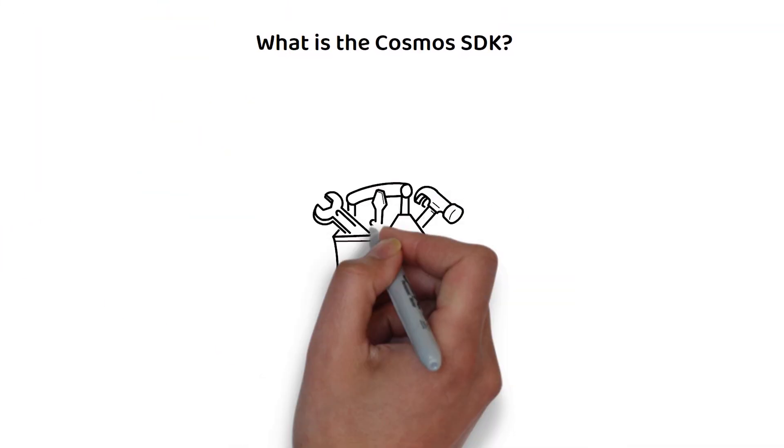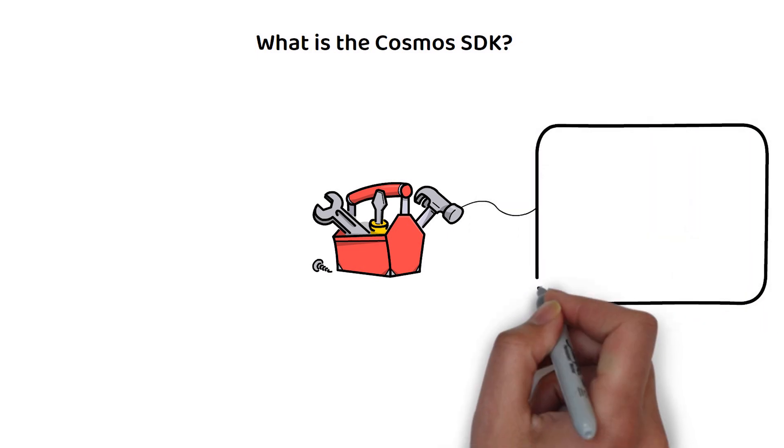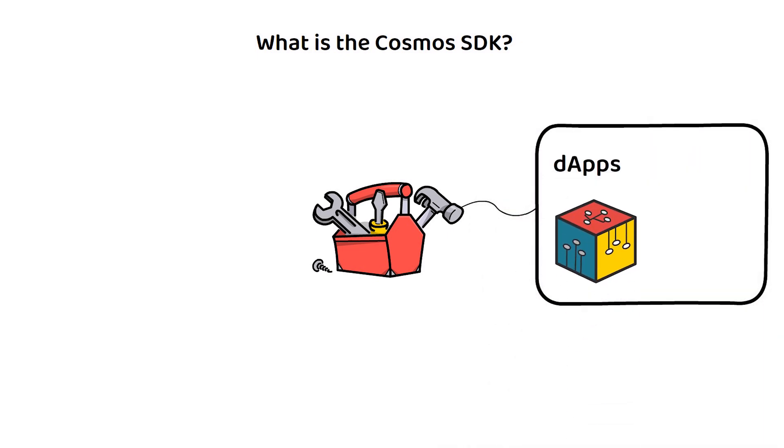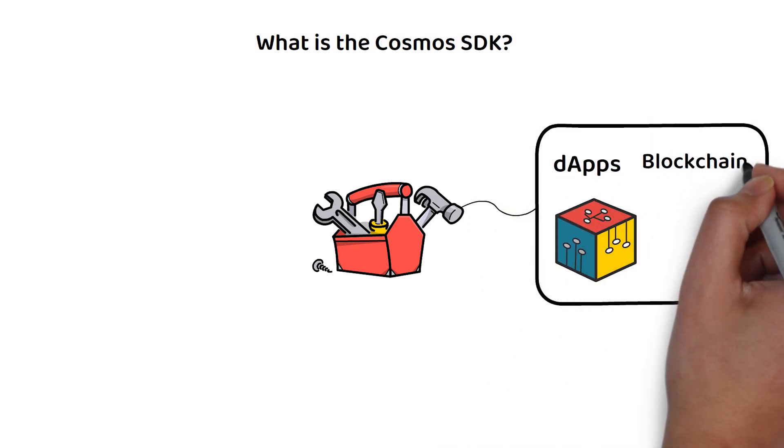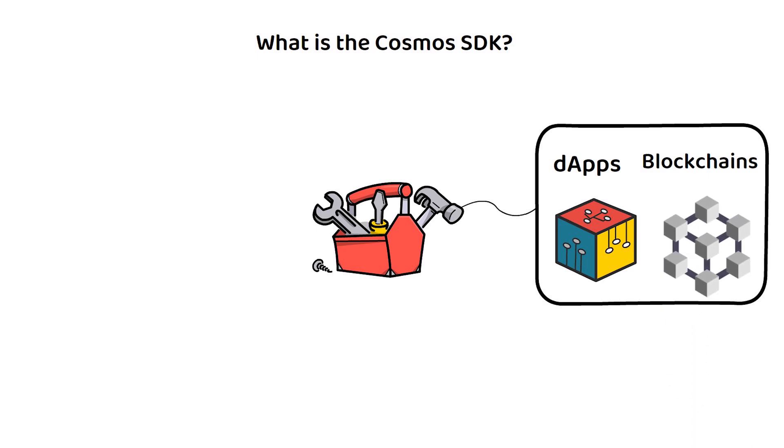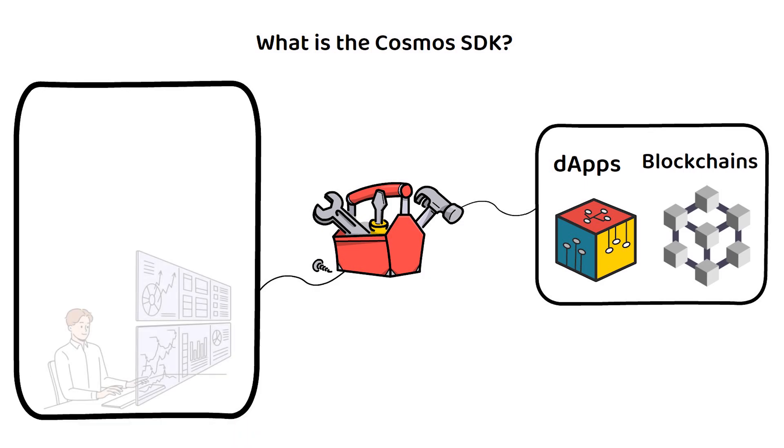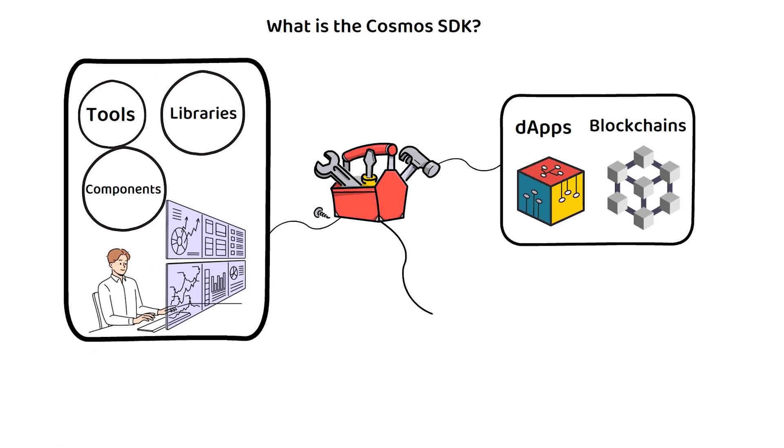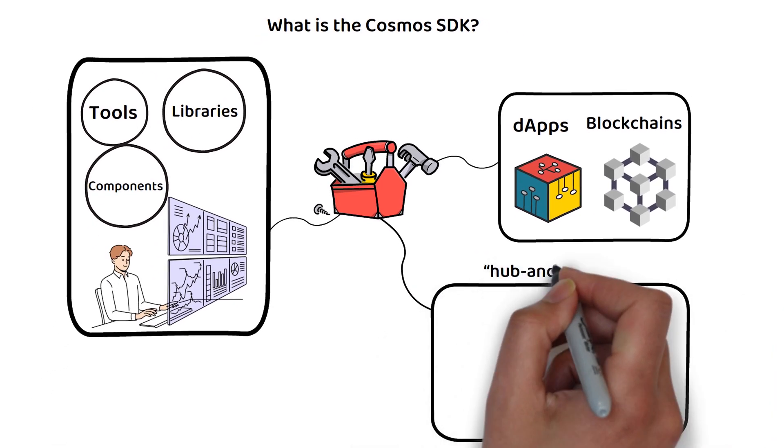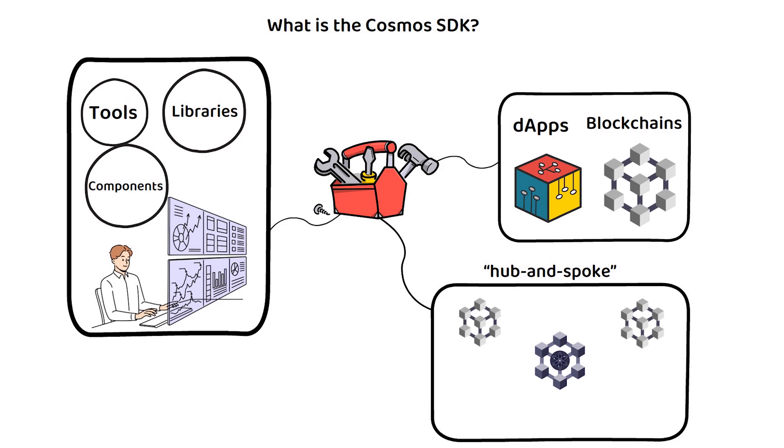The Cosmos SDK can be thought of as a framework for building decentralized applications and custom blockchain networks. It is designed to simplify the development process by providing developers with a set of modular tools, libraries and pre-built components to create their blockchain applications. All SDK built blockchains will have a hub-and-spoke relationship with the Cosmos Hub.